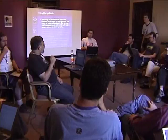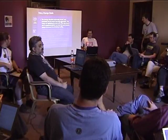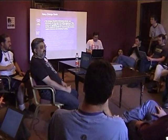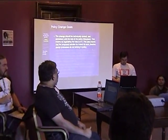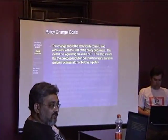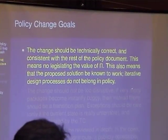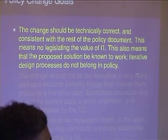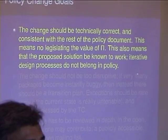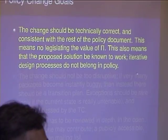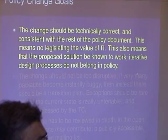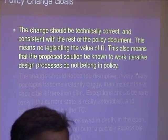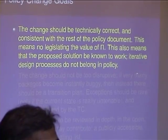Moving to the second half: I'm not happy with the current policy change process. Before I describe what's wrong with it and how I think we can fix it, I want to look at what I think are the goals of the policy change process. The first thing is that we obviously want changes going in to be technically correct. They should be somewhat consistent with the rest of the policy. I want the policy to be a consistent document — one that doesn't contradict itself or state things that aren't true.